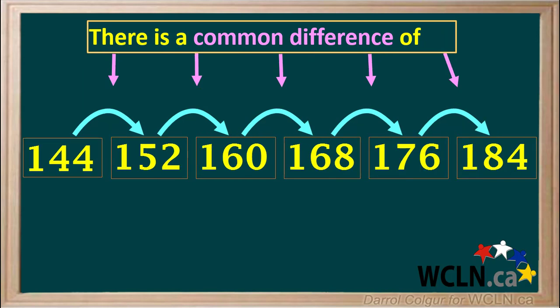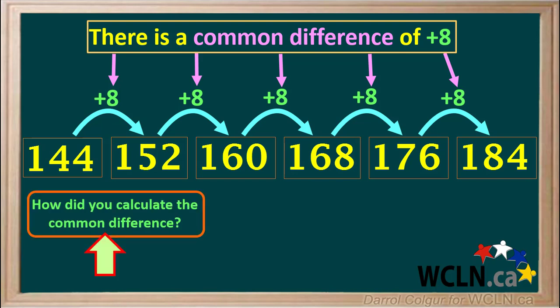As you might imagine, we can come up with many different patterns of numbers with common differences. Can you come up with the common difference in this set of numbers? Look at them for a while. We see that the common difference is positive 8. If you got that, how did you calculate it?